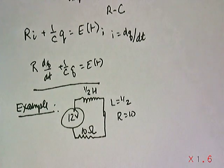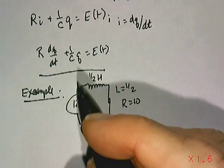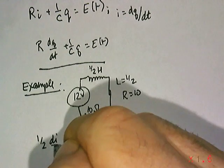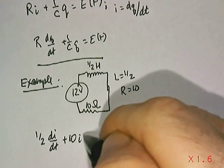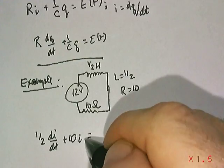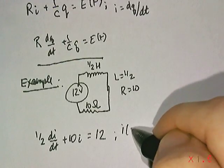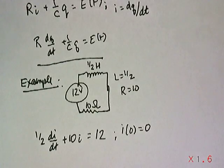Then we apply the differential equation we have. What you would have is one-half times the rate of change of the current, DI/DT, plus 10 times I has to be the external voltage, which in this case is a battery, which is 12. We also know that initially the current is zero, so I(0) equals zero.